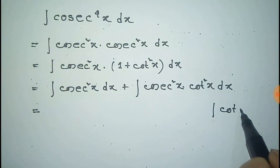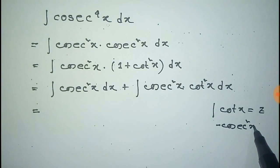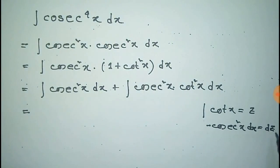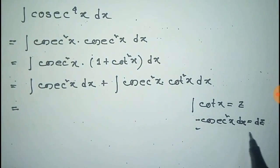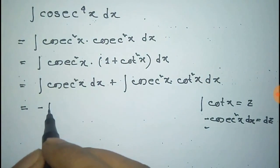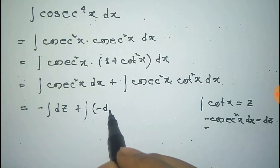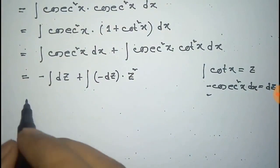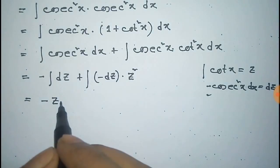Now we consider that cot(x) is equal to z, so the derivative of cot(x), that is minus cosec²x dx, is equal to dz. We substitute this condition into our integration: cosec²x dx becomes minus dz, and cot²x becomes z².